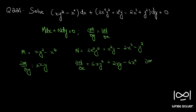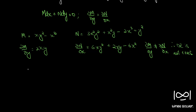So ∂M/∂y is not equal to ∂N/∂x. Therefore the differential equation is not exact. Now we have to find an integrating factor. We first find the difference ∂N/∂x minus ∂M/∂y.